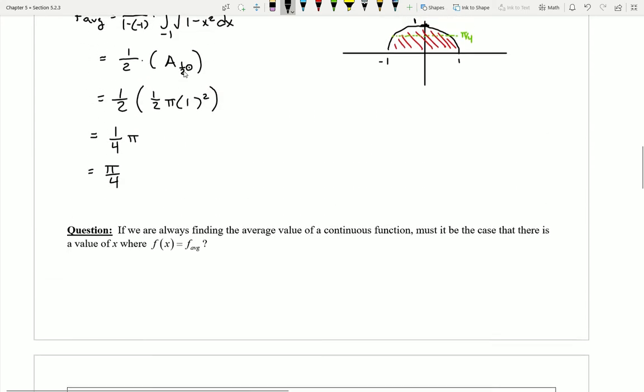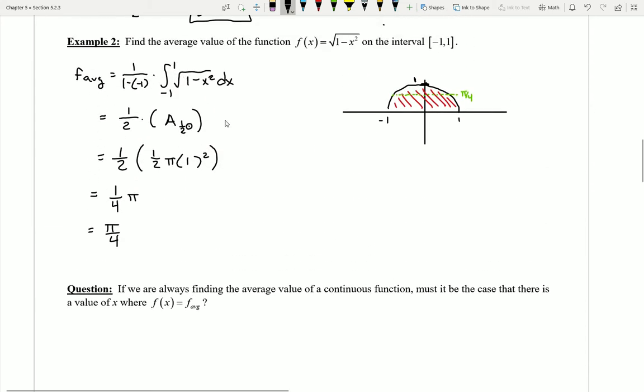If I take a look back at the previous examples that we did in the last video, I can see how this question can start to make sense. Notice in example two, my average y value that we found was π over 4. And so the question is, are there any x values in my interval, say negative 1 to 1, that actually produce a y value of π over 4?